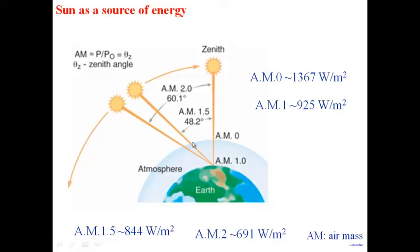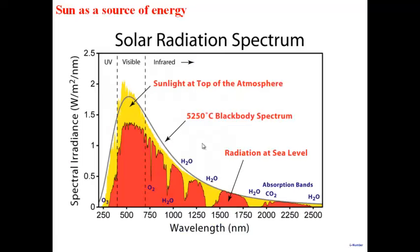If sunlight goes at a particular angle, it passes through more of the air mass, more gets absorbed, and we call it AM 1.5, which gives 844 watts per meter square. At an even greater angle, you get 691 watts per meter square. Most solar cells are characterized under AM 1.5 — 844 watts per meter square, or 84.4 milliwatts per centimeter square.